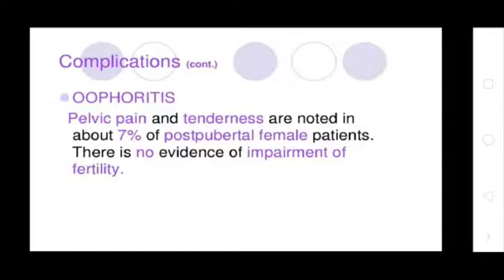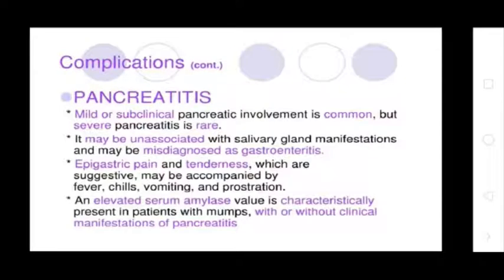Oophoritis: Pelvic pain and tenderness are noted in about 7% of post-pubertal female patients. There is no evidence of impairment of fertility. Pancreatitis: Mild and subclinical pancreatitis is common, but severe pancreatitis is rare. It may be unassociated with salivary gland involvement, and manifestations may be misdiagnosed as gastroenteritis.